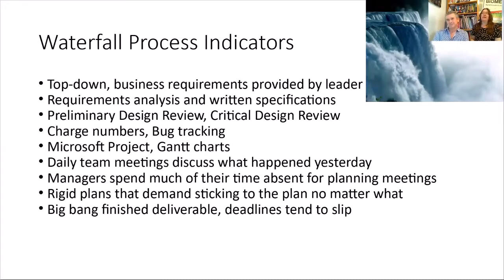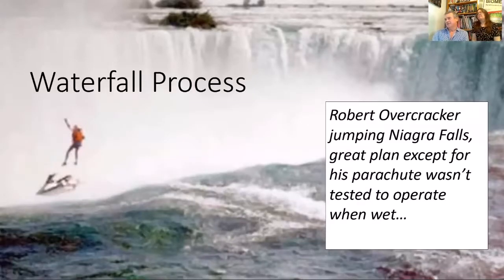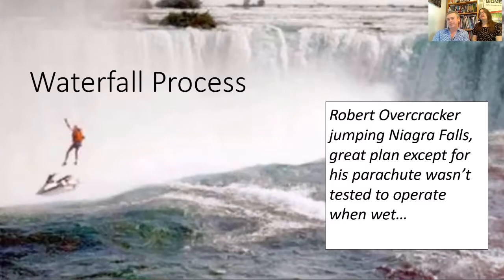Waterfall process indicators: top-down requirement analysis, preliminary design reviews, critical design reviews, charge numbers for bug tracking, Microsoft Project, and daily team meetings to discuss what happened yesterday. Managers spend much of their time in planning meetings, with rigid plans that demand sticking to the plan no matter what, plus a big bang finish deliverable — and deadlines tend to slip. Robert Overcracker had a great waterfall plan jumping over Niagara Falls, but his parachute wasn't tested to operate when wet. This is why people like Agile — plans can change.